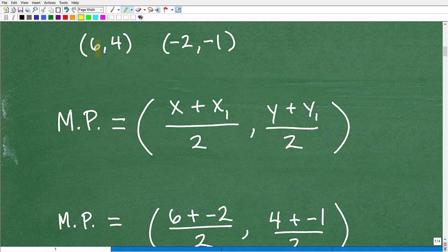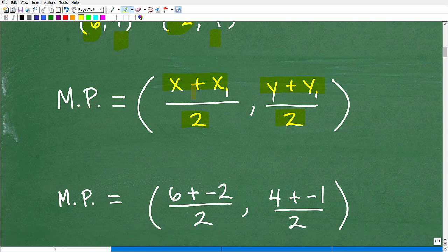So here, our x coordinates is 6 and negative 2. So to find the average, you simply add these guys up - 6 and negative 2 - and divide by 2. That's all you do. So that's what this part of the formula states. We're going to average the x's. So take your x's, add them up and divide it by 2. And we're going to do the same thing with the y's. So we'll average the y's. In other words, we're going to take 4 and negative 1 and divide that by 2.